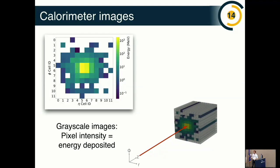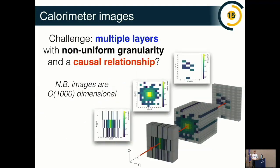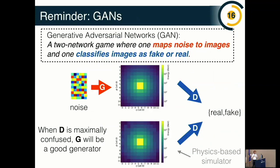A calorimeter image looks like this: I have some chunk of material that's segmented — like a pixelated object — and we shoot particles at it. Those particles leave energy as they go through the segmented object, and I can think of this as a grayscale image where the pixel intensity corresponds to the energy deposited in that part of the detector. In practice it's more complicated: our detector has multiple layers with different segmentation on each layer — imagine an RGB image where the red, green, and blue channels all have different pixel sizes. These images are roughly 30-by-30, so about a thousand-dimensional probability distribution.